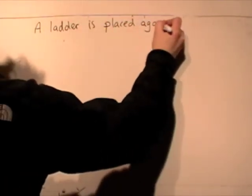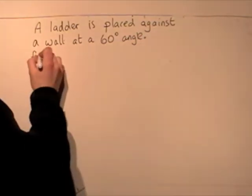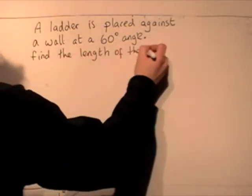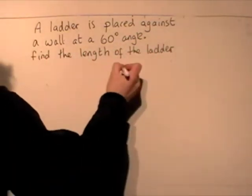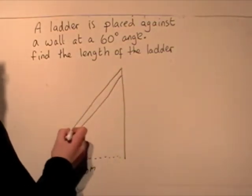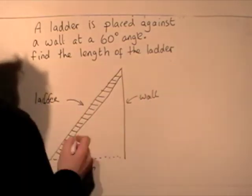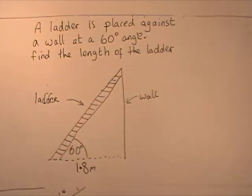Okay, here's another question. A ladder is placed against the wall at a 60 degree angle. Find the length of the ladder. So we have a diagram here. The ladder is 1.8 meters away from the wall at its base, and it's at an angle of elevation of 60 degrees.